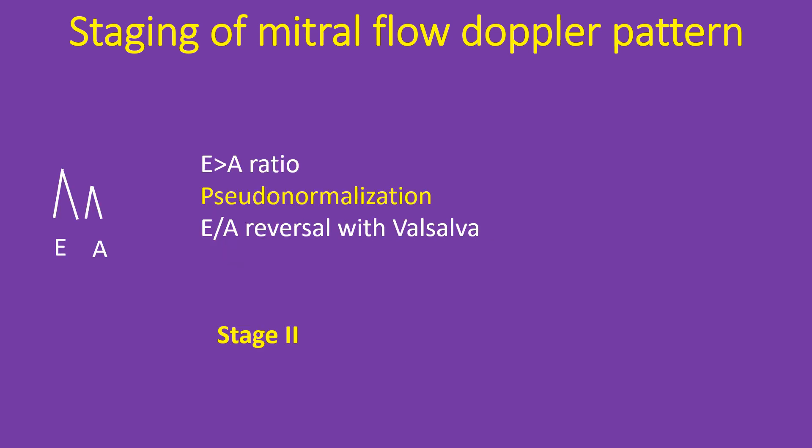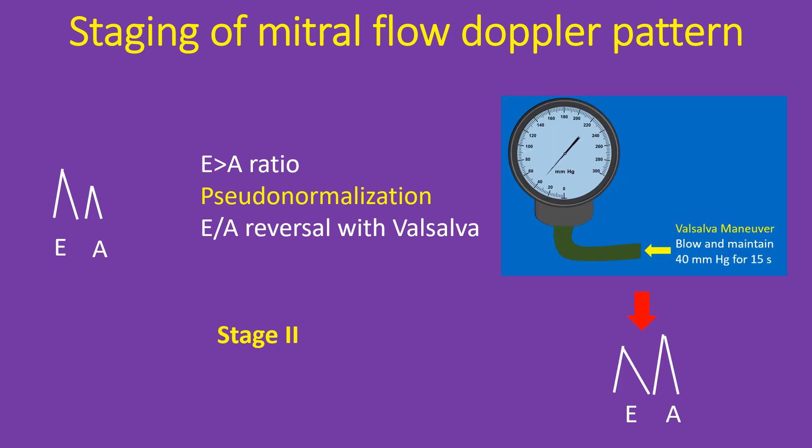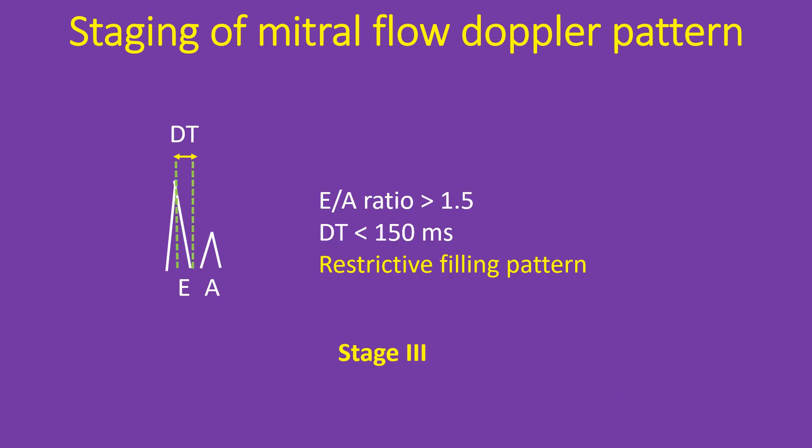In Stage 2 diastolic dysfunction, the E wave becomes taller due to elevated left atrial pressure — this is called pseudonormalization of the filling pattern. In this stage, E by A reversal can still be demonstrated during Valsalva manoeuvre. The E wave becomes very high so that E by A ratio is more than 1.5 and the DT is below 150 ms.